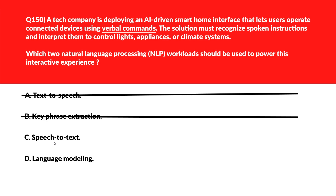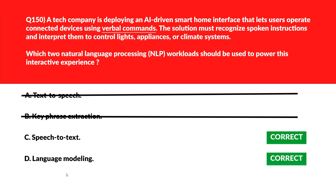Option C: Speech-to-Text translates verbal instructions into text format that the system can process — we'll keep this. Option D: Language Modeling helps interpret the meaning and context of converted text to understand intent — we'll keep this. So the two correct answers are option C, Speech-to-Text, and option D, Language Modeling. Please stay tuned for the next part of this series.